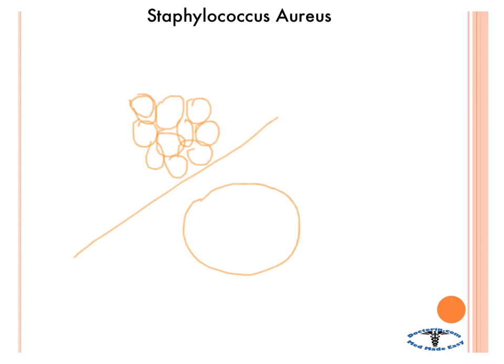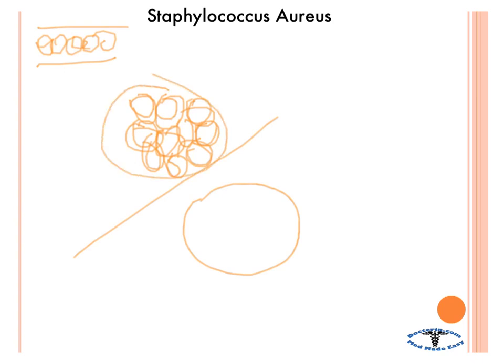So first thing you'll notice is that this is microscopically what it looks like. It's a gram-positive cocci, and it's usually in clusters. Streptococci is in chains — it looks like a strip of cocci — where staph is just a bundle or cluster of cocci all together in one place.